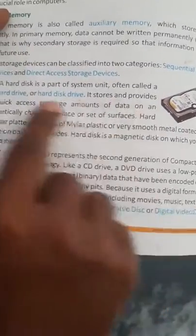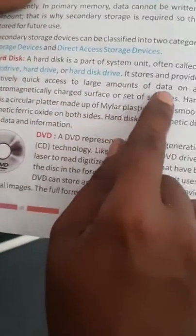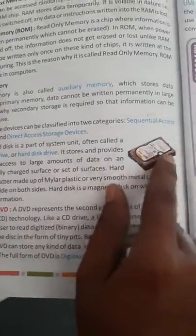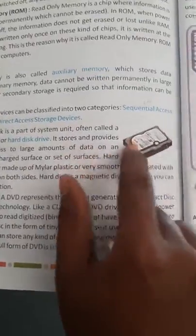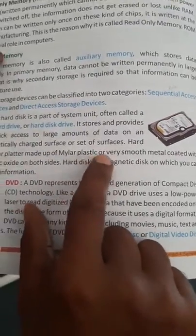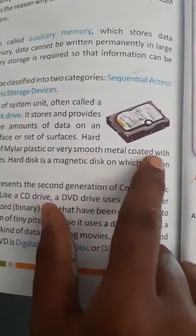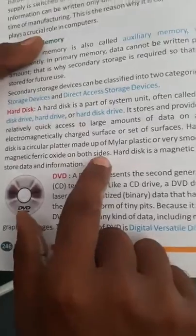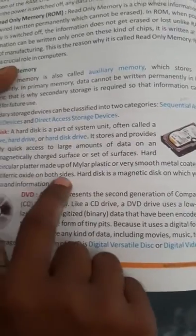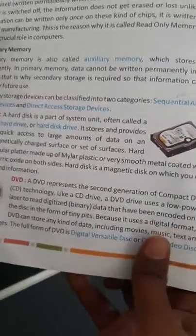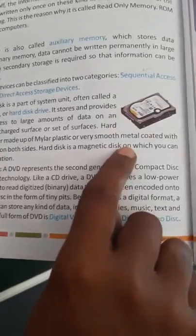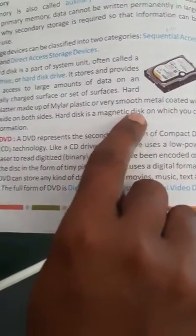It stores and provides relatively quick access to large amounts of data on an electromagnetically charged surface or set of surfaces in the hard disk. There will be a circular platter made up of mylar plastic or very smooth metal coated with magnetic ferric oxide on both sides of the plate. Hard disk is a magnetic disk on which you can store data and information.